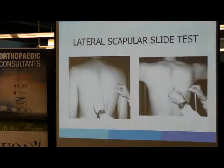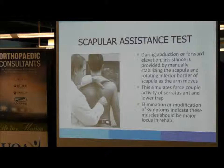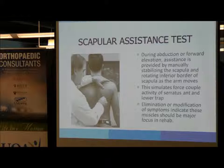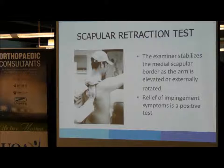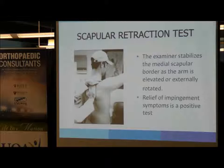The scapular assistance test provides manual stabilization of the scapula during abduction or forward elevation, rotating the inferior border as the arm moves to simulate forced couple activity of the serratus and trapezius. This can eliminate symptoms of scapular dyskinesis. The scapular retraction test involves stabilizing the medial scapula border as the arm is elevated or externally rotated; if it provides relief of impingement symptoms, that's a positive test.